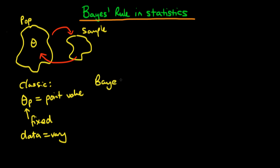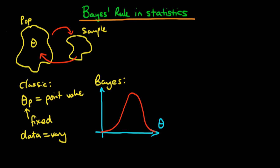In Bayesian statistics this is slightly different. Unlike classical statistics, we don't suppose that the parameter theta within the population has a particular point value. Instead, we suppose that there is a probability distribution which governs the values most likely for that particular parameter — some sort of probability distribution over theta. So in Bayesian statistics it is the parameter theta which is thought of as the thing which varies, and the thing that is fixed is the data.